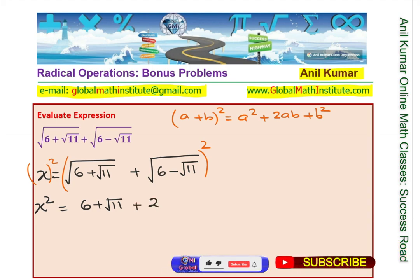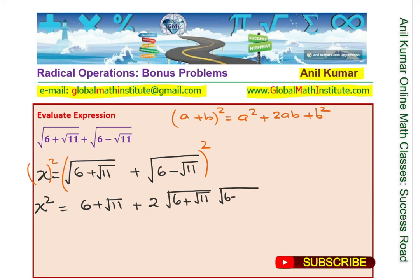Expanding: square of the first radical gives us 6 plus square root of 11, plus 2 times square root of (6 plus square root of 11) times (6 minus square root of 11), plus the square of the second term which is 6 minus square root of 11.